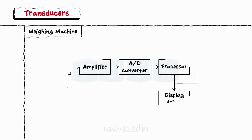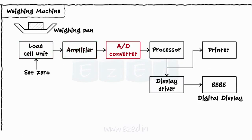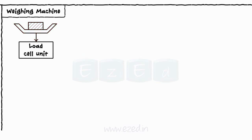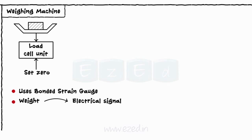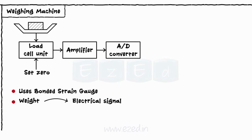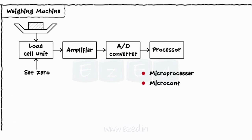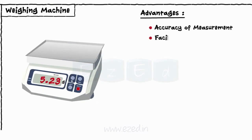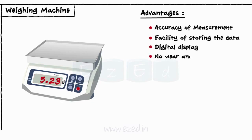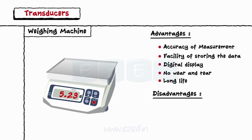Next, we will study about weighing machines. The different blocks of a weighing machine are load cell unit, amplifier, analog to digital converter, processor, display driver, display, and printer. The weighing pan is directly connected to the load cell unit. The load cell unit has a bonded strain gauge which converts the weight into electrical output. Zero setting adjustment is also provided with the load cell unit. Electrical output of the load cell unit is amplified by an amplifier and converted into a digital signal by an A to D converter. The processor, which can be a microprocessor or microcontroller, processes the input data, stores it in memory, and performs computational operations. The advantages of weighing machines are accuracy of measurement, facility of storing data, digital display, no wear and tear, and long life. The only disadvantage is the requirement of high initial cost.